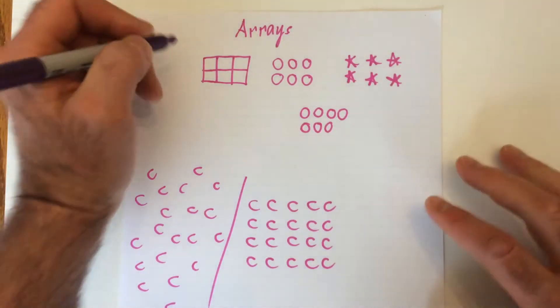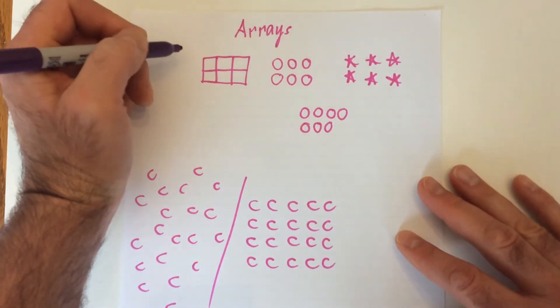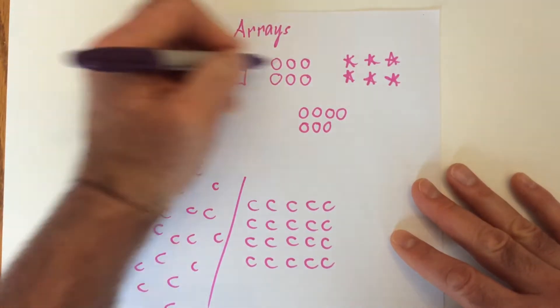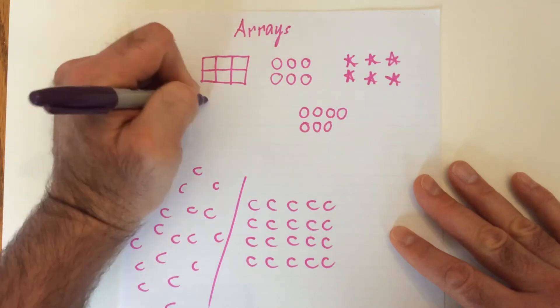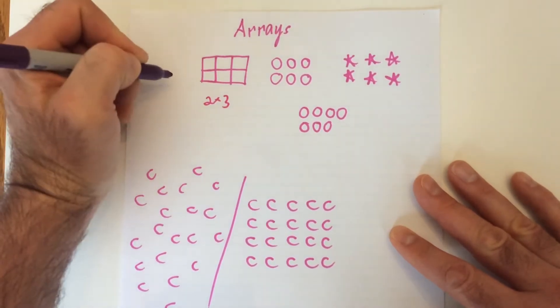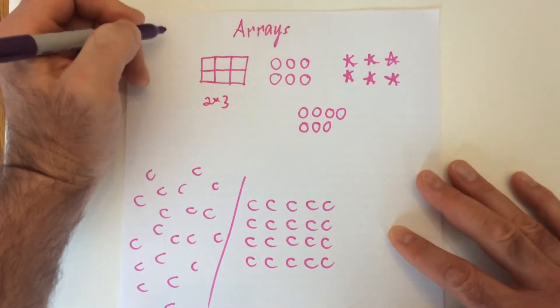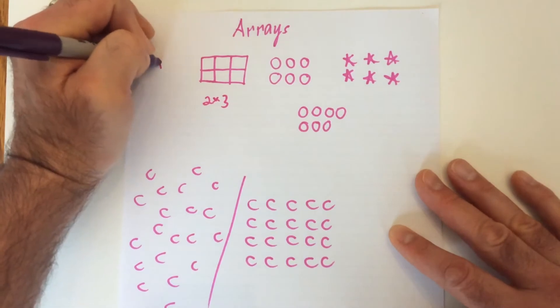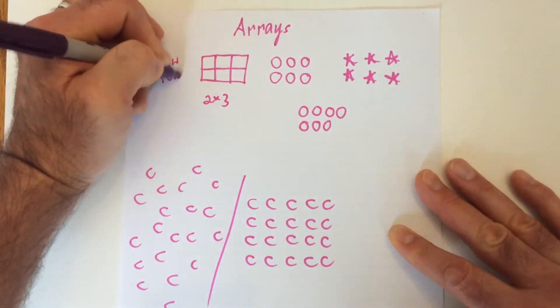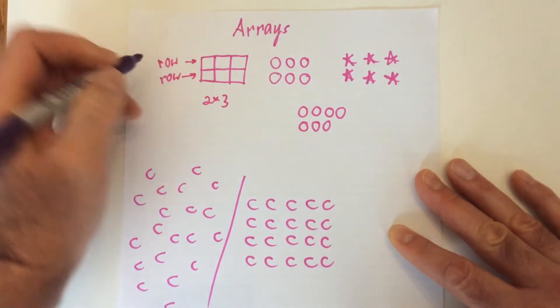So I'm showing you right now some examples. These are all examples of the same multiplication, 2 times 3, or we can say 2 rows of 3. So this is a row, a row here, and a row here.